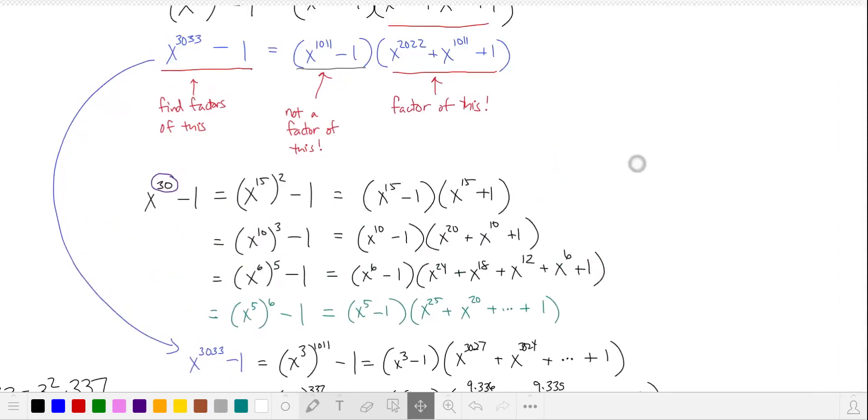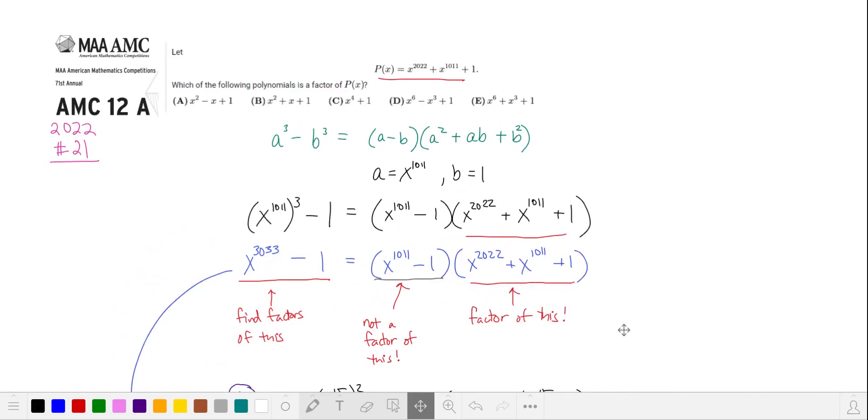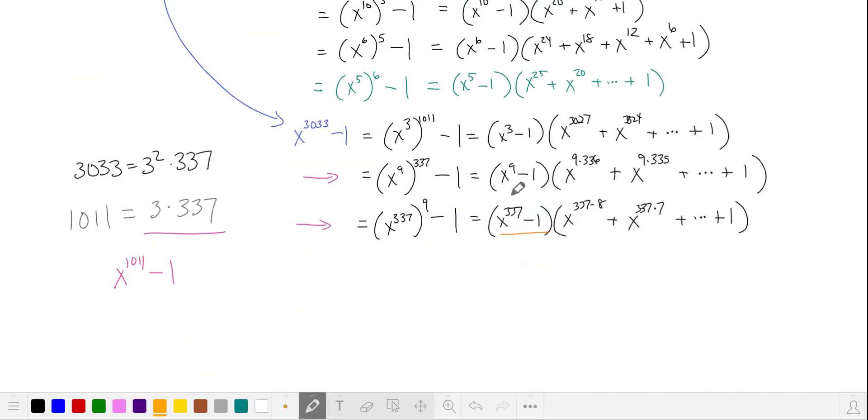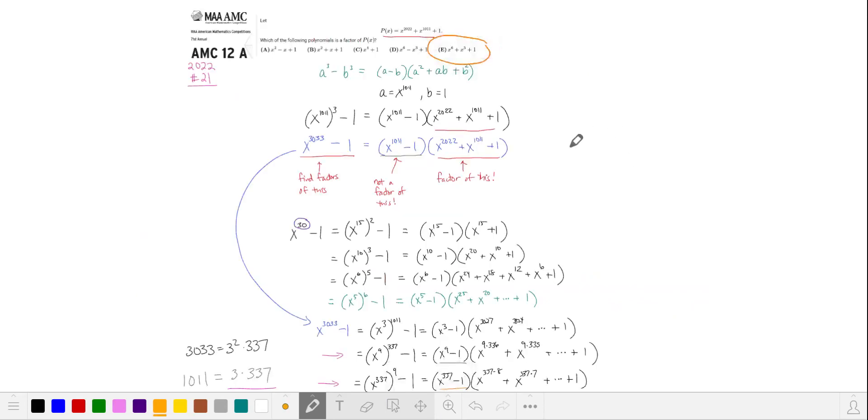And looking at the answer choices, we see that the exponents are pretty small. So I don't want to start with x to the power of 337. Let's take a look at this one, x to the 9th minus 1. This is also a difference of cubes factorization. So we can pull out x cubed minus 1. This factor looks familiar. It's option E.